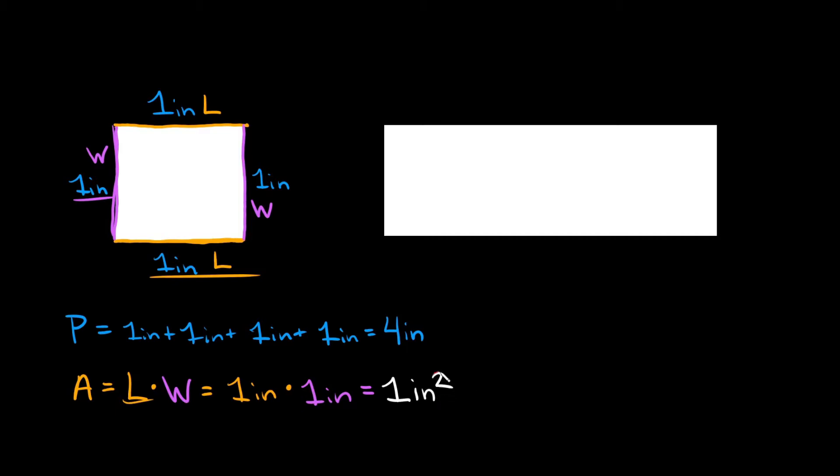Now where is this square coming from? Well it's because we're basically combining like terms. So what's one times one? Well that's one. And now what's inches times inches? Well that's inches squared.